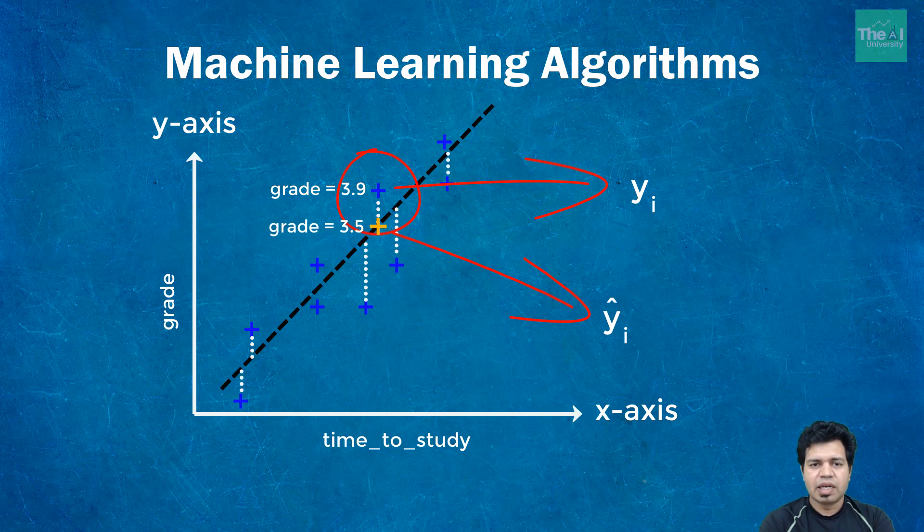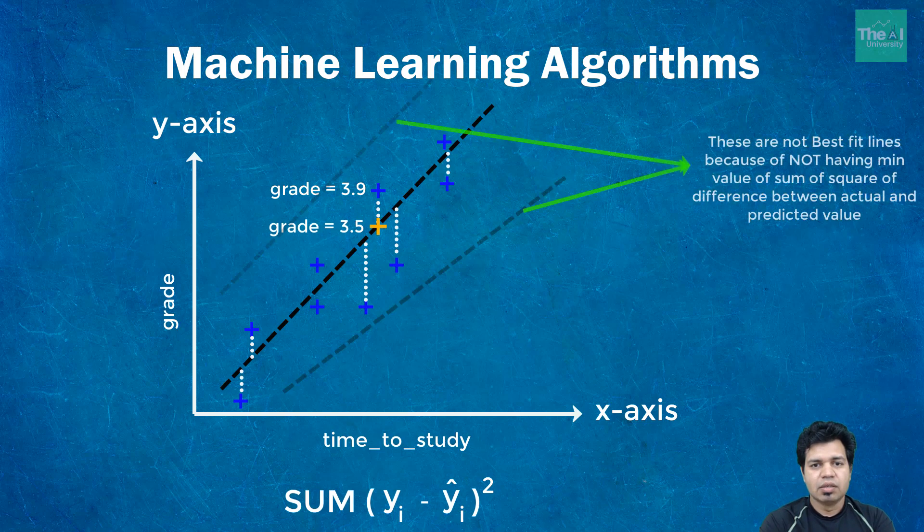So in order to get the best fit line, we actually take sum of square of difference between actual observation and predicted observations. Meaning you can take the distance value of these individual white dotted lines and then you can square them and then finally add all of them. Now whichever trend line has minimum value, we will take that line as best fit line.